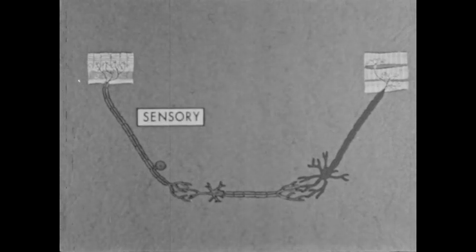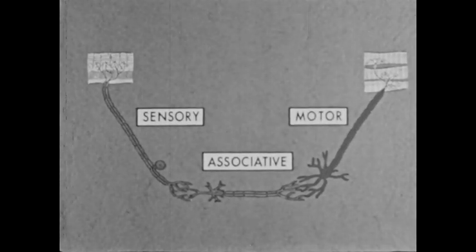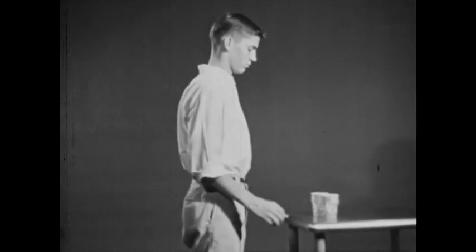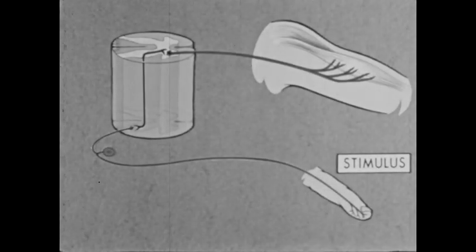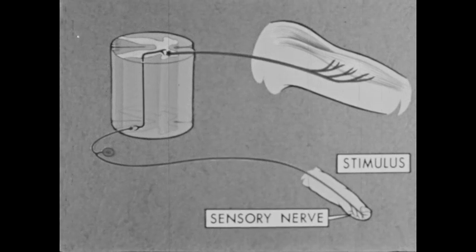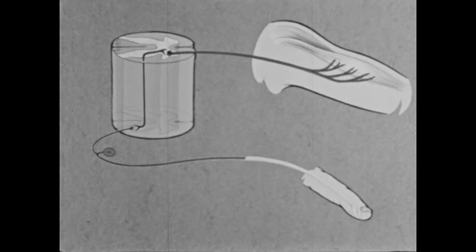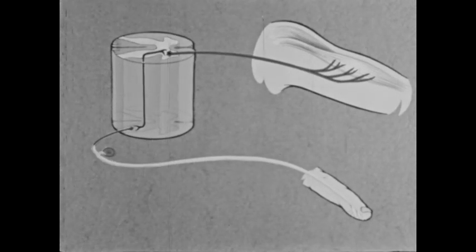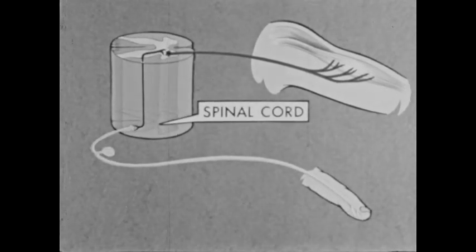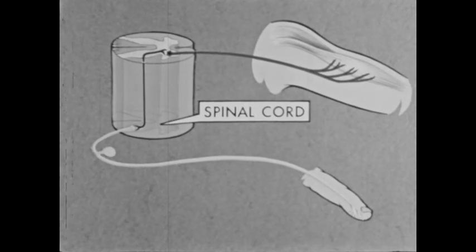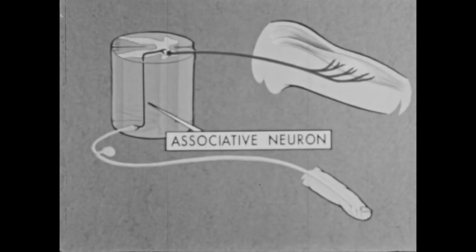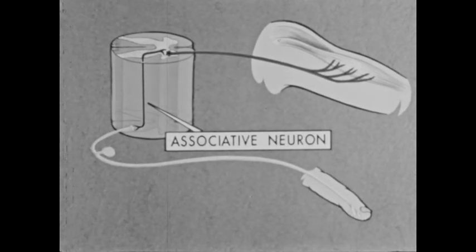How do sensory, associative, and motor neurons work together? Let's look again at our example of a reflex response. The stimulus is transferred as a nerve impulse to the sensory nerves in the fingertips. The nerve impulse travels at the approximate rate of more than 200 feet per second across the sensory nerve toward and into the spinal cord. Since the end of the sensory nerve does not touch the associative neuron ends in the spinal cord, the nerve impulses pass over an open area called a synapse.